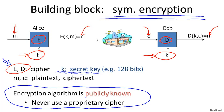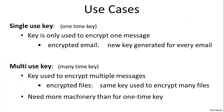If someone comes to you and says, hey, I have a proprietary cipher that you might want to use, the answer usually should be that you stick to standards, to standard algorithms, and not use a proprietary cipher. In fact, there are many examples of proprietary ciphers that as soon as they were reverse engineered, they were easily broken by simple analysis. Even in the simple case of symmetric encryption, which we're going to discuss in the first half of the course, there are actually two cases that we're going to discuss in turn.